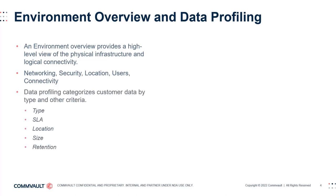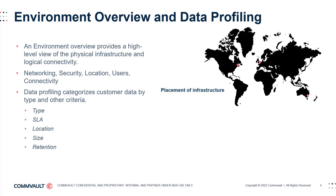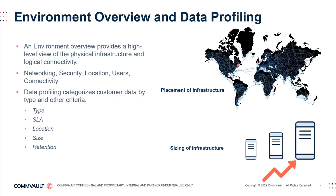A data profile categorizes a dataset that shares the same or very similar set of criteria. We will discuss some sample data profiles in the coming slides, but as a simple introduction, a basic profile would define criteria such as the data type, SLA, its location, size, and retention requirement. Establishing an environment overview and data profiles is an important discovery exercise as it sets up the next phases of your solution architecture, helping you to determine where to place core Commvault infrastructure components, how to size them, and how they will connect and communicate with the system. These tasks also help establish data protection plans, which relate directly to how each set of data should be managed under Commvault.